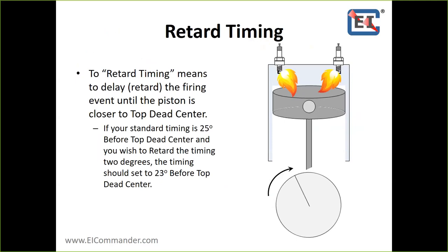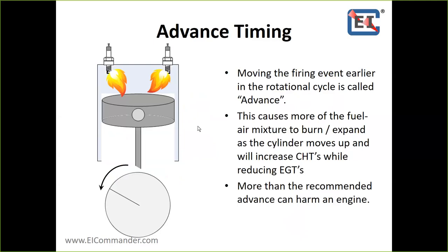Retarding the timing means to delay the firing event until closer to top dead center. Standard timing for a parallel valve engine is 25 degrees; 20 degrees for an angle valve. Things that impact that will be high compression pistons — if you put high compression pistons in a 25-degree parallel valve engine, maybe your timing should be closer to top dead center, perhaps 22 or 23 degrees. Advancing the timing means firing well before that theoretical best timing, which will make you burn more fuel-air, your cylinder EGTs are going to go up, and it can eventually harm an engine.